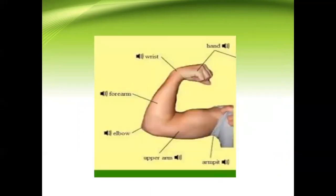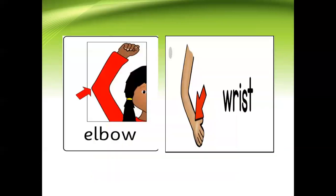Let us study the parts of the arm. This is your shoulder, this is your arm, this is the elbow, and this is the wrist. The upper part of the elbow is called the upper arm, and the lower part of the elbow is called the forearm.